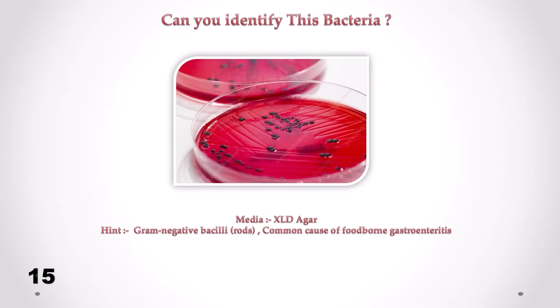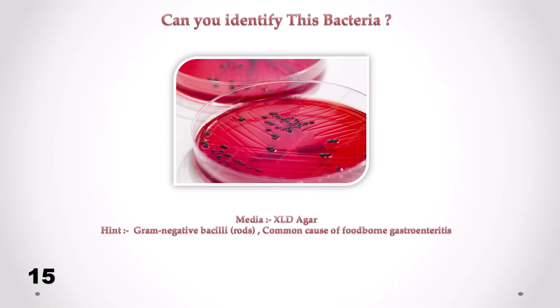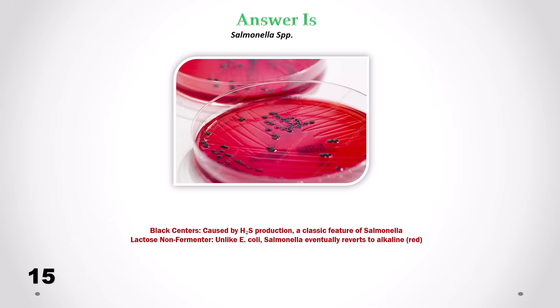Can you identify this bacteria? Correct answer is Salmonella. We can see black centers caused by H2S production — a classic feature of Salmonella. Also, lactose non-fermenter. Unlike E. coli, Salmonella eventually reverts the medium to alkaline, red.